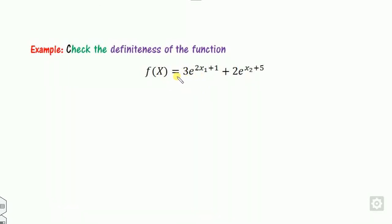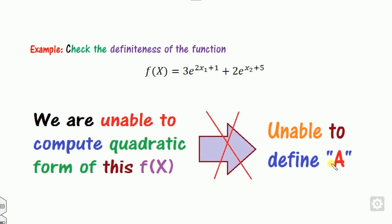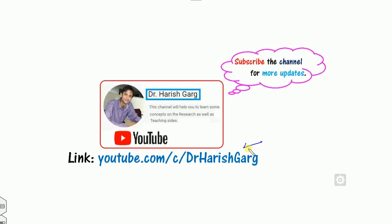If the given function is not quadratic, you cannot write it in the form X^T A X and cannot directly extract matrix A to check definiteness. For such functions, we need another concept called the Hessian matrix, which we will cover in our next class. Before that, make sure you understand when X^T A X is positive definite or negative definite. You can browse the provided link for other videos on optimization techniques. Best of luck students, happy learning.